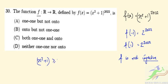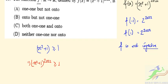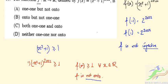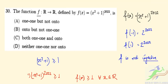Also, x² + 1 ≥ 1 for all x in R, so (x² + 1)^2022 ≥ 1 for all x. Therefore F(x) ≥ 1 for all x in R, meaning F is not surjective (not onto). The correct option for question 30 is option D: the function is neither one-one nor onto.